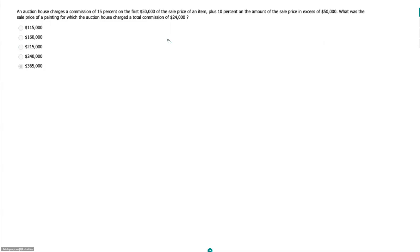An auction house charges a commission of 15% on the first $50,000 of the sale price of an item, plus 10% on the amount of the sale price in excess of $50,000. What was the sale price of a painting for which the auction house charged a total commission of $24,000?